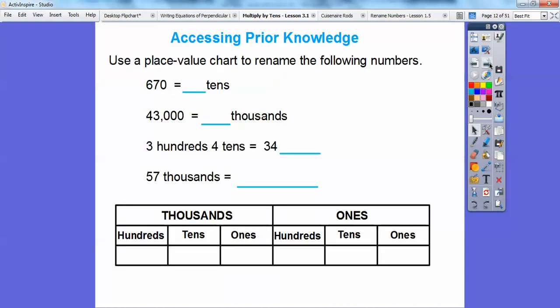Remember this. This was from lesson 1.5 I believe. So I used the place value chart to rename the following numbers. So 670 equals how many tens? So if we go down here in the place value chart and put in 670 right there, it equals that many tens right there. There are 67 tens right there. So how many tens are 670? There's 67 tens in there.